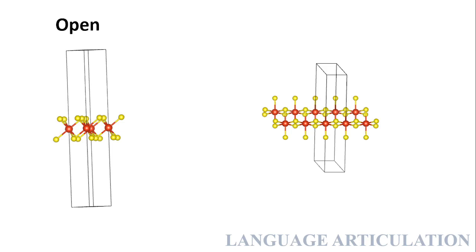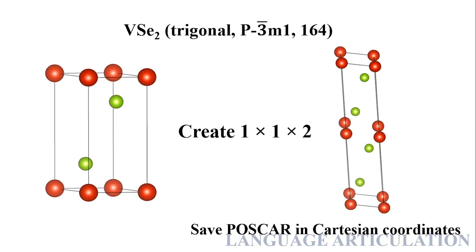If you just want to visualize, go to Boundary, increase the boundary size, and you will see your monolayer. Now let's take another case.